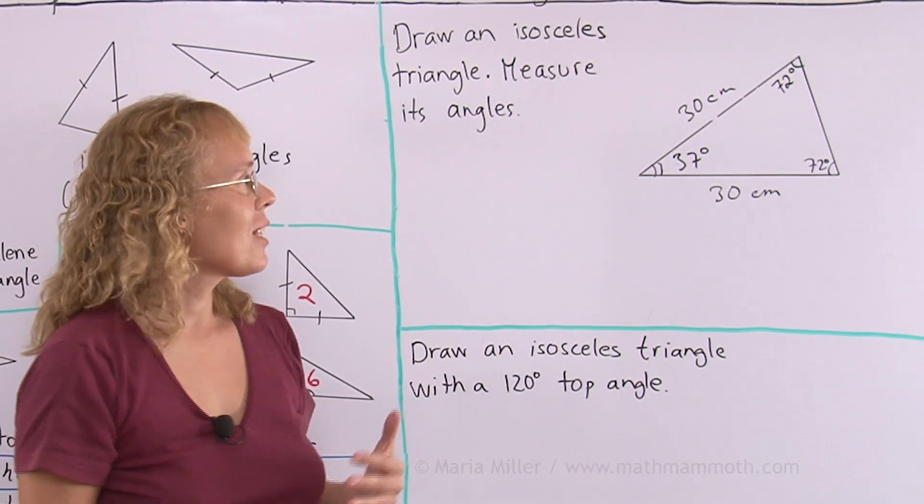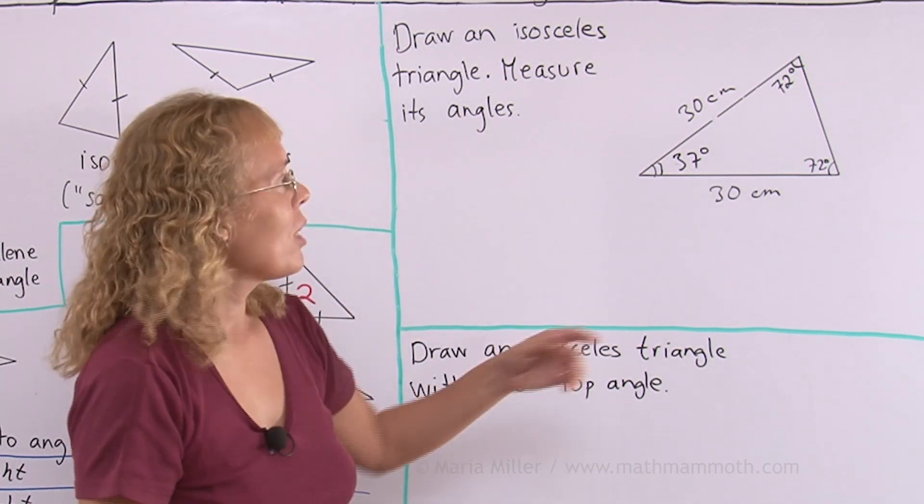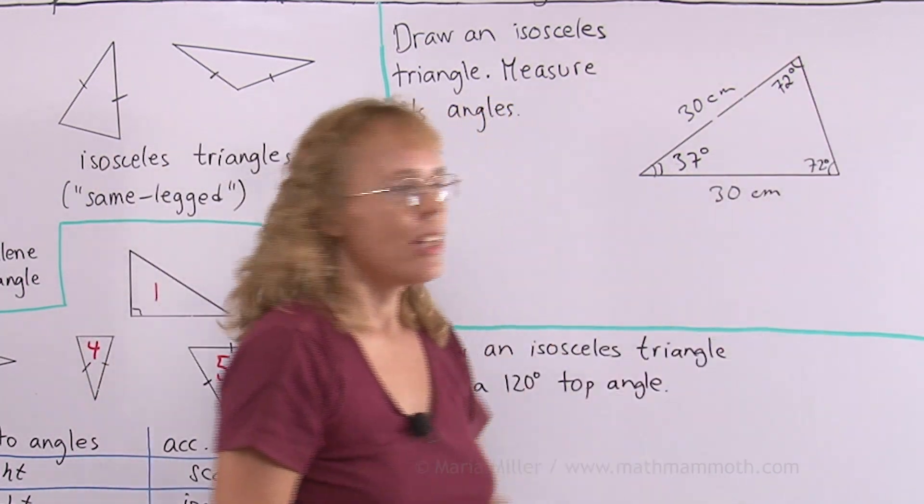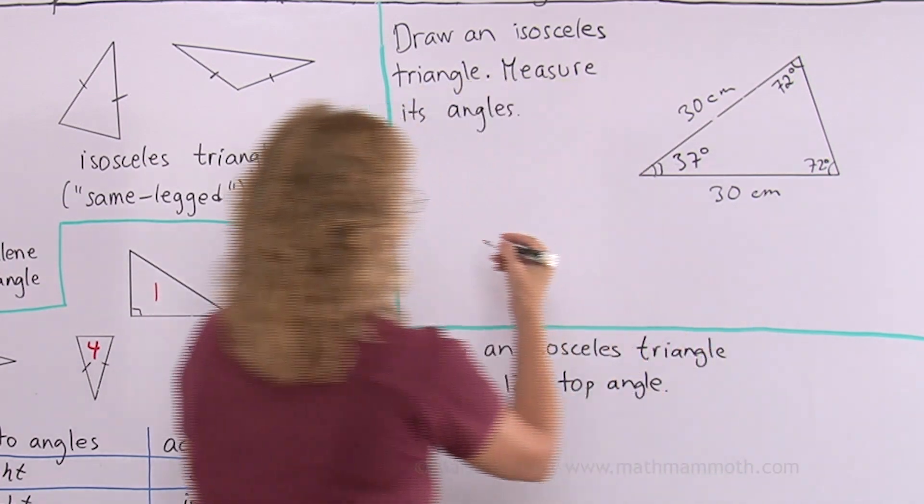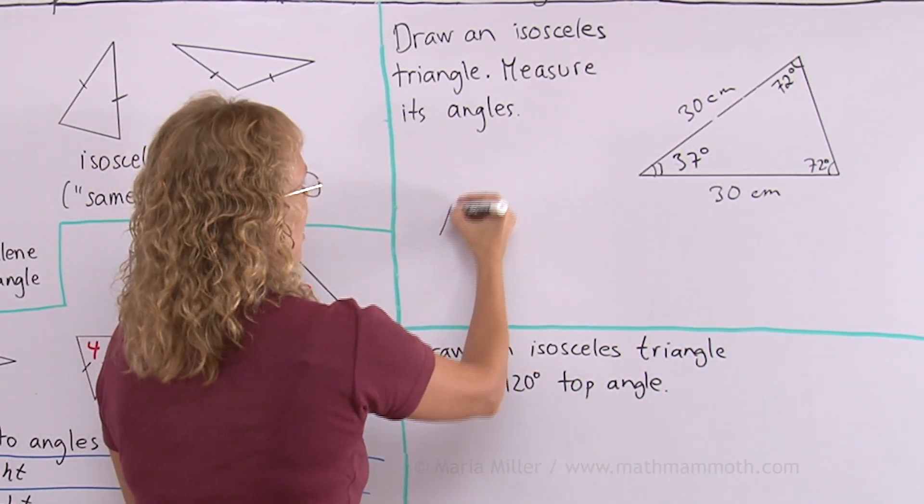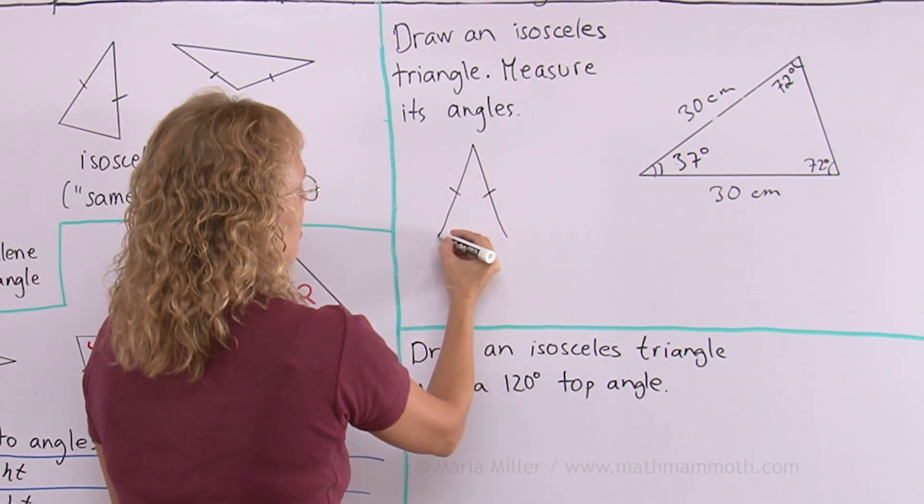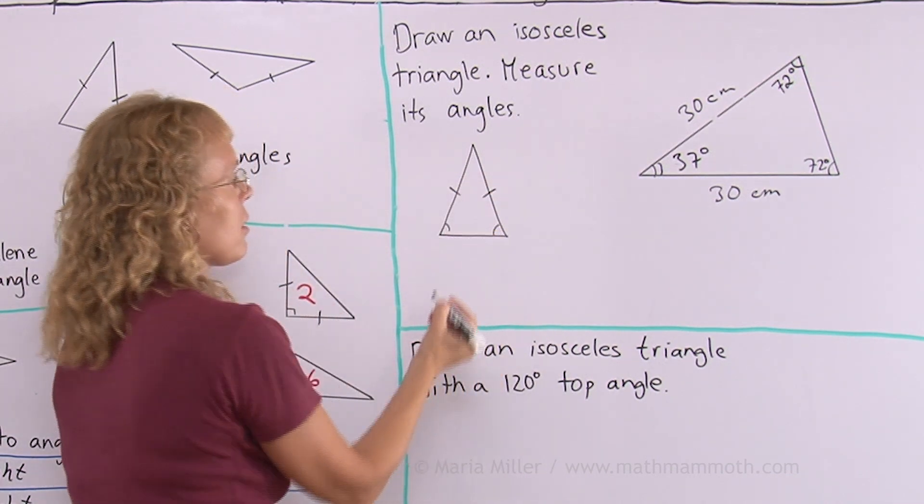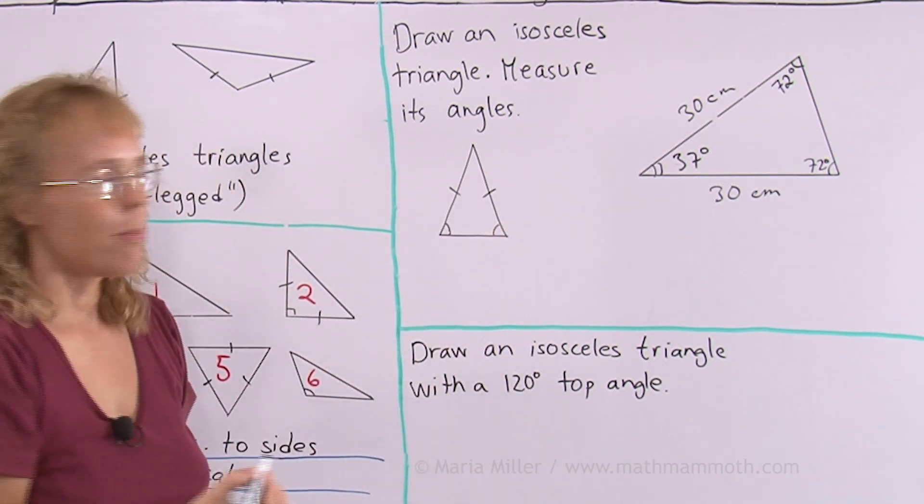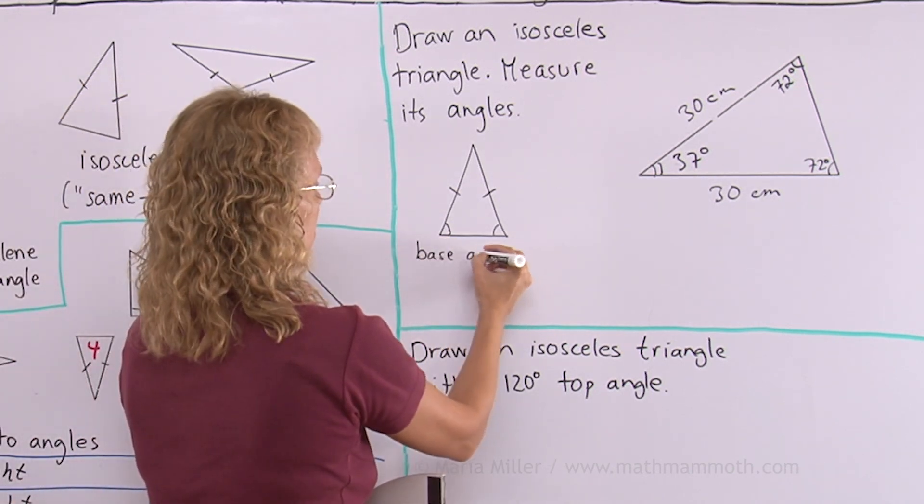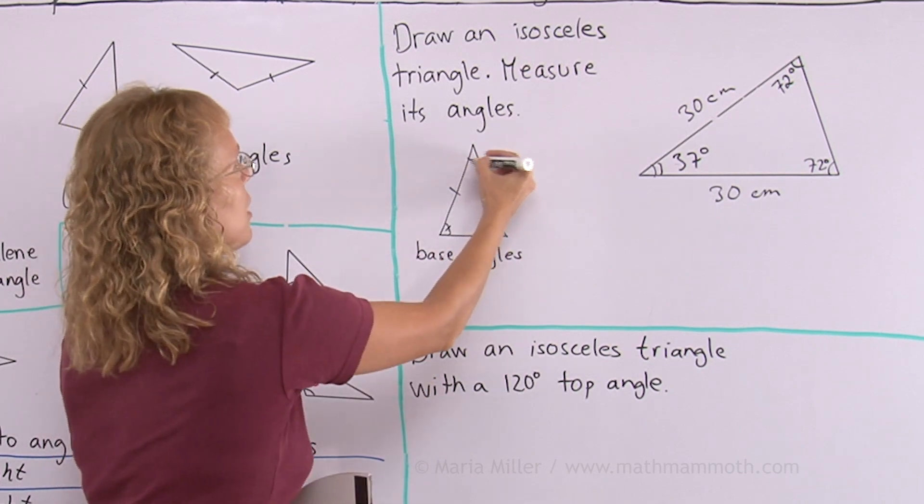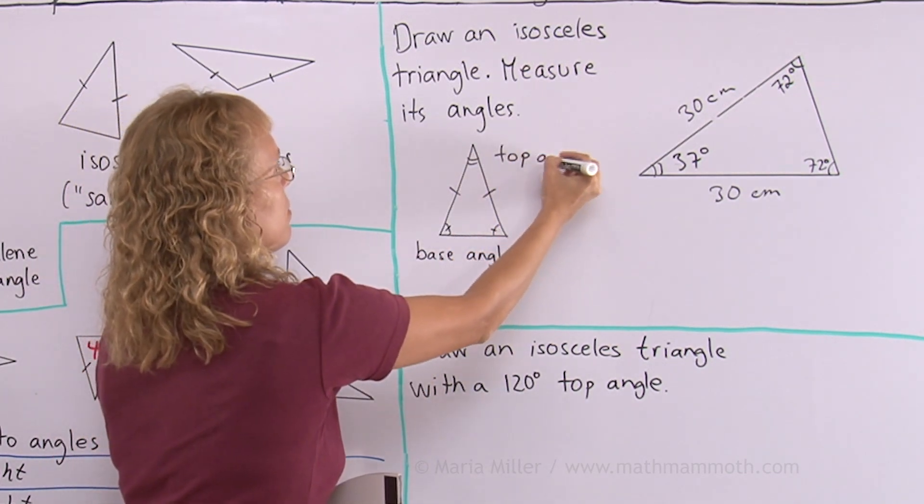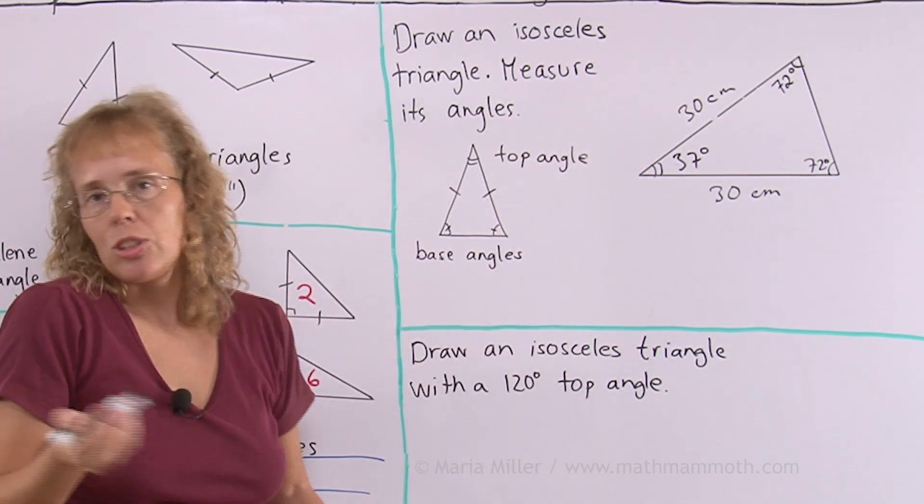It actually always happens that in an isosceles triangle we have two angles that are congruent. And those angles are called the base angles. Let me sketch an isosceles triangle. If these sides are congruent then these two angles, they're called the base angles, and they are congruent. This one here is called the top angle. And it measures something different.